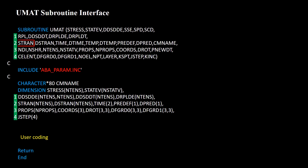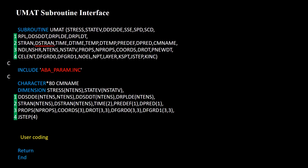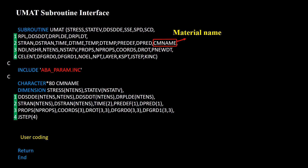One variable is an input and contains the strain tensor at the beginning of the increment. The next variable is also an input and contains the strain increment, or change of the strain tensor, in this increment. The name of the material defined in the GUI is transferred to the UMAT by CMNAME.